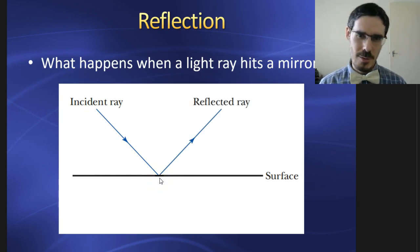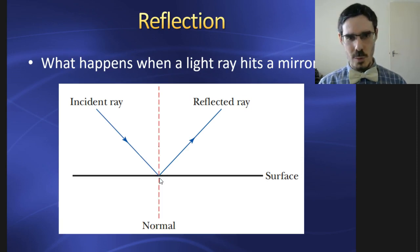Well, normally it reflects, doesn't it? How can we be precise about how it reflects? We draw in the normal, and then we're interested in working out this angle against this angle.